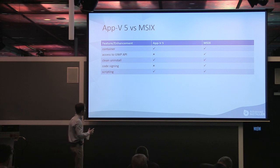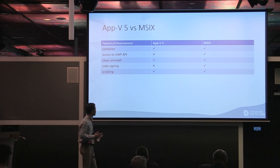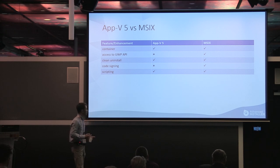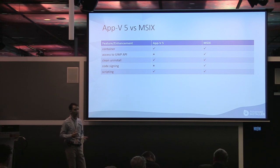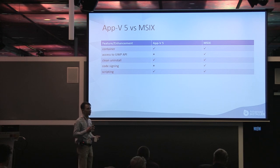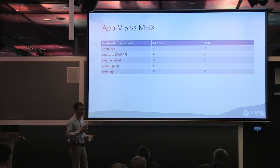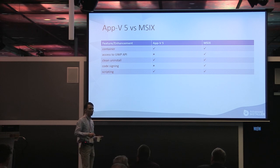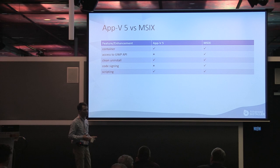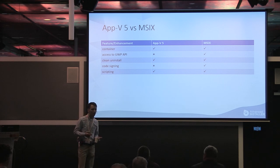Moving on to scripting. In AV5, you can use scripts to either bypass AV limitations or customize your package. For example, you can't have drivers because they run inside the kernel. The workaround is to create a PowerShell script that installs the driver, add that script along with the driver source file within the AV package, and run it from a deploymentconfig.xml.